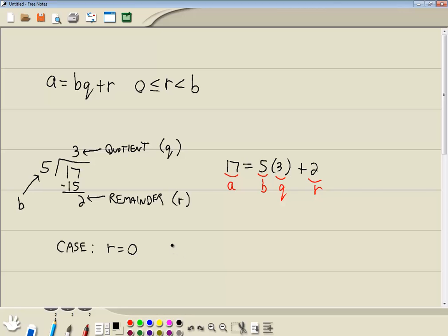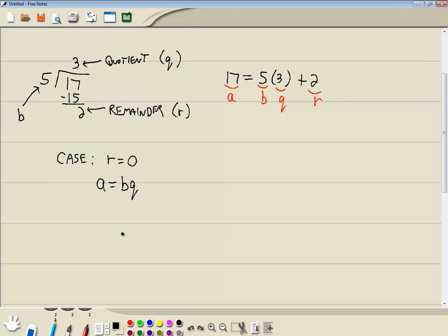One of them is where your remainder is equal to 0. If I go up to A is equal to BQ plus R, and I put 0 in for R, I end up with A is equal to B times Q. Well, let's look at an example.